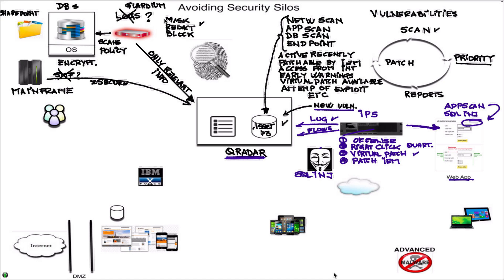You've now stopped the bad traffic by applying the virtual patch. The first line of defense was the quarantine, then you did the virtual patch. Now you can do things like ask your developer to fix that particular vulnerability. When you present all this evidence saying this vulnerability exists, we have seen people trying to exploit it, we've blocked it but we need to fix the code — they will actually do that. And once they do, you can tell your IPS guy to remove that signature, because you don't want too many signatures running on your IPS as that can be detrimental to its performance.